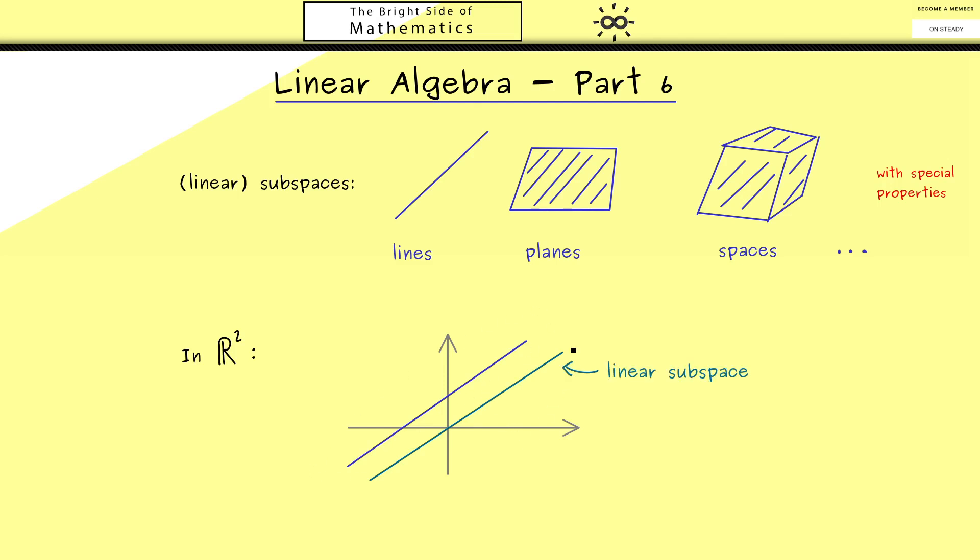And here you can immediately remember that we need the origin such that the line is a linear subspace. Otherwise we would talk of an affine subspace. However, in order to understand them you first have to understand linear subspaces. And indeed such a line through the origin is a typical example for a subspace. Therefore I think now we are ready for the definition.